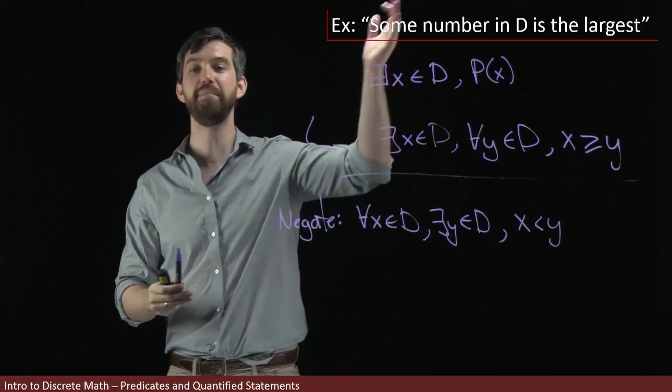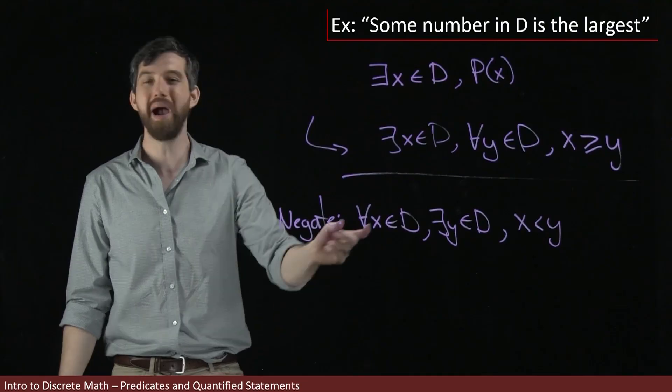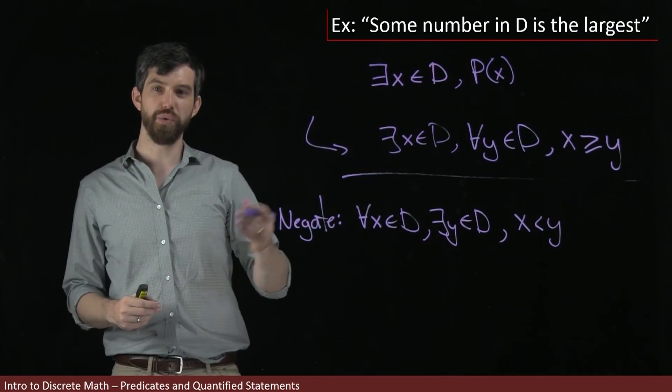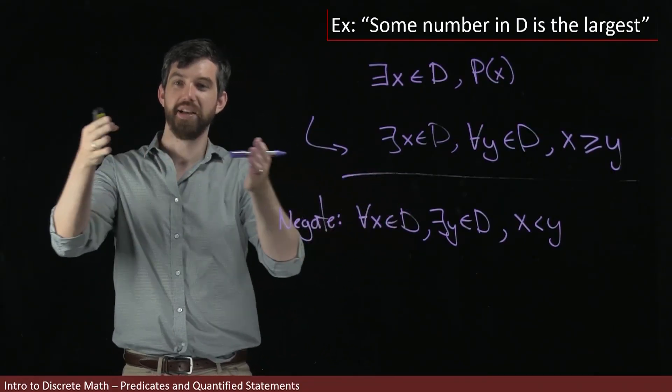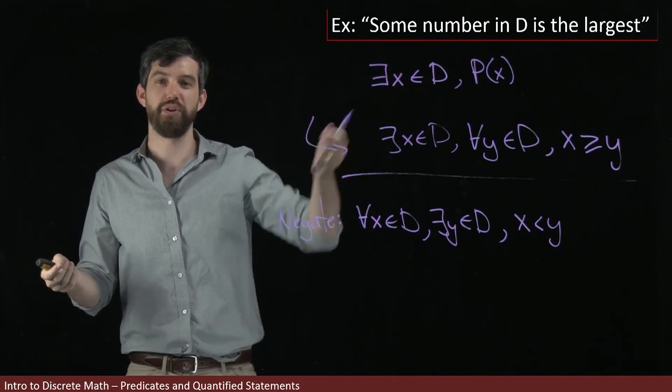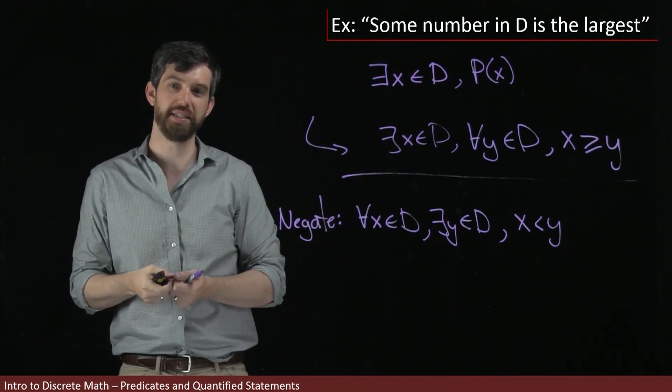That would be negating my initial claim that some number is the largest. This is saying no matter what you choose, there's always a number which is bigger than it. So this example is precisely the opposite of the previous example. The only difference being that here I have an arbitrary set D as opposed to the integers specified in the previous example.